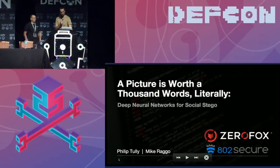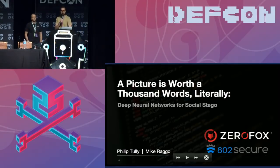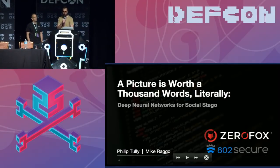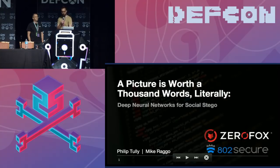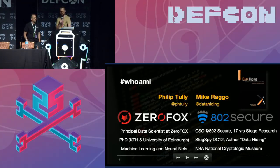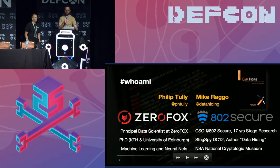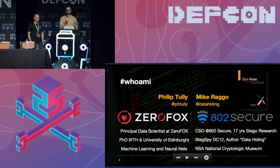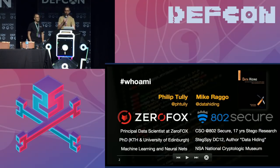Hey, guys. Welcome to the talk: 'A Picture is Worth 1,000 Words Literally — Deep Neural Networks for Social Stego.' Let me do a quick intro for both of us first. I think we have kind of orthogonal skill sets that complement each other nicely for this kind of talk. I'm a data scientist at ZeroFox, so I work in social media security.